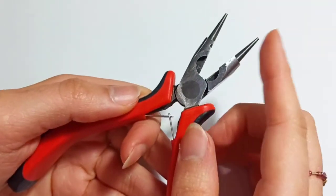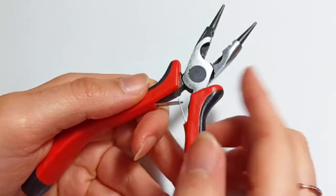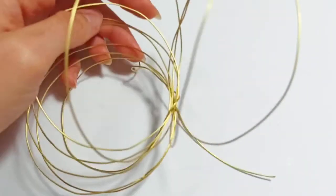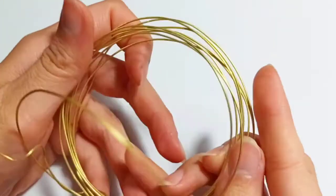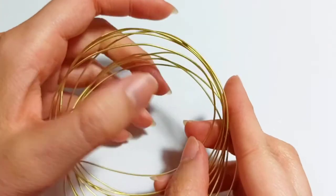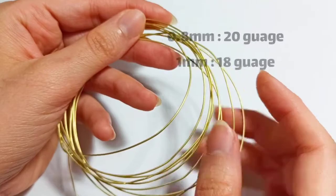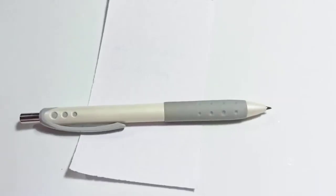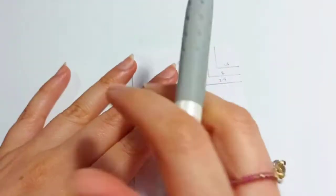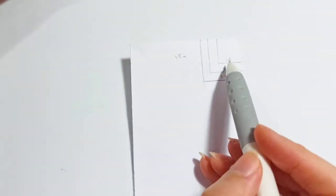All we need are main tools: round nose pliers, chain nose pliers, wire cutter, wire of about 0.8 or 1 millimeter thick (I'm using 0.81 in this tutorial), piece of paper, and pen or pencil.